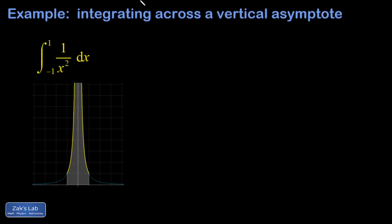All right, let's integrate across a vertical asymptote and see what happens. First I want to show what would happen if we naively computed the integral by guessing the antiderivative and plugging in the limits of integration. Something goes really wrong.